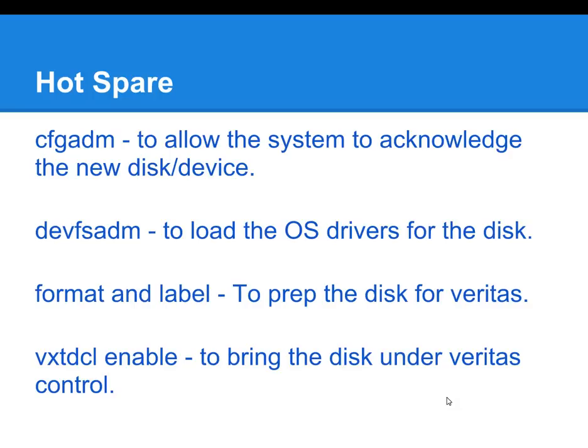The first command that you would run is cfgadm. This command forces your system to scan for new devices and disks that have been recently added. Once this is complete, you will see an output of its findings. There's an example of this command and all these commands in several of my other Veritas tutorials. Moving forward, you will be able to see the output of that command.